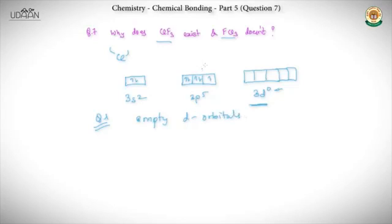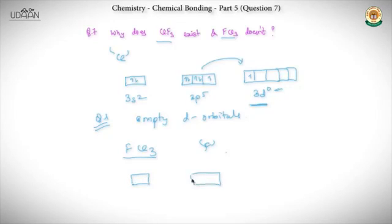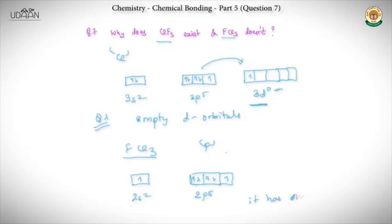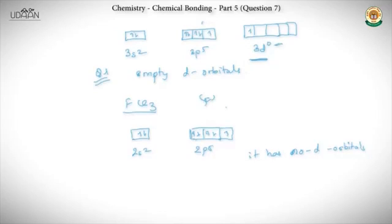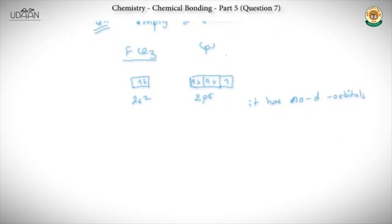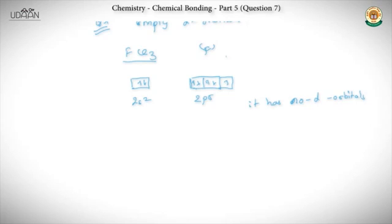Whereas in FCl₃, the central atom is F, and the outermost electronic configuration is 2s²2p⁵ — it has no d-orbitals at all. So it seems fairly straightforward: you need empty d-orbitals, and if empty d-orbitals aren't present, the compound formation is just not a possibility. That's the basic idea behind why FCl₃ is not formed and ClF₃ is.